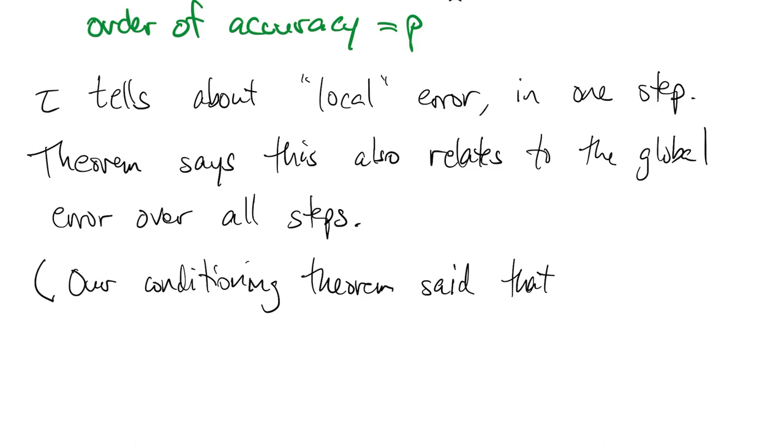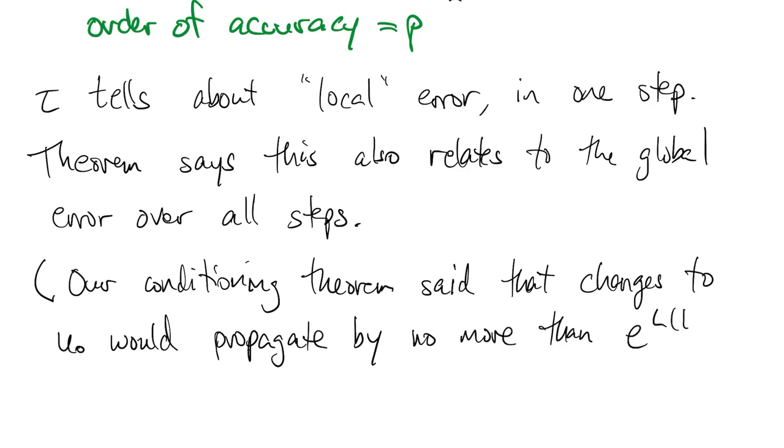But if you look back at our theorem about the conditioning of initial value problems, it said that the effect of perturbing the solution can grow no faster than e to the l times t minus a. So the convergence theorem here takes advantage of that same idea to show that essentially nothing worse than that can happen in this case either.